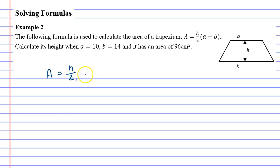We start off by taking our formula, A equals h over 2, a plus b, and we need to substitute numbers for the proper variables. We know it has an area of 96, so that's going to go where the capital A is, 96.